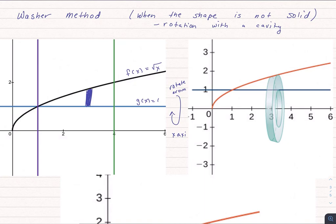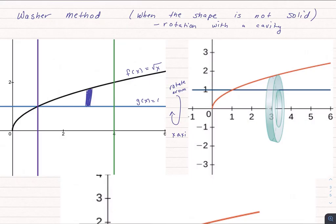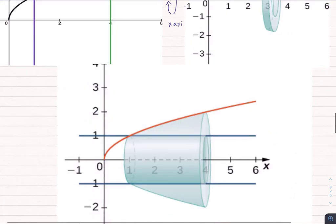So if you have a function f of x and a function g of x, we've got this little rectangle here. And when we rotate this around the x-axis, we'll get a washer. Just like before we got a disk, now we have a washer. It's just a disk with a hole in it. If we spun this around from 1 to 4, the shape would look like this.